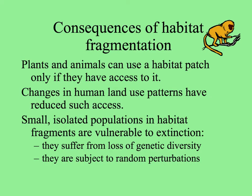Not only plants, but animals can only use a habitat patch if they can get to it — if they can get dispersed to it. As we've divided up habitats, we've made it more difficult for animals and plants to move around. Small, isolated populations in habitat fragments that are small and remote from other pieces of the habitat are especially vulnerable to extinction because the genetic diversity of those populations erodes, and maybe they can't mate with close relatives anymore. Also, they're subject to random perturbations and can easily be wiped out by severe weather events, disease, or other disturbances.